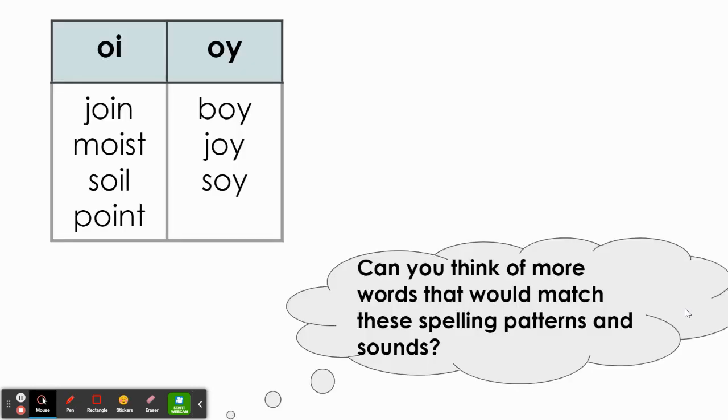Let's review those words we just practiced. In the o-i category, we have join, moist, soil, point. For o-y, making the o-y sound, we have the words boy, joy, soy.